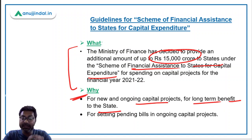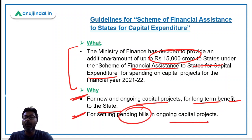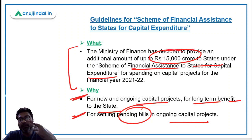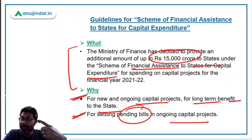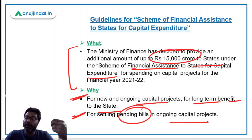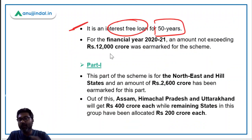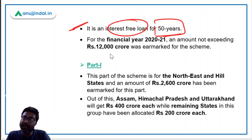The fund must be spent on capital projects only. It can also be used for settling pending bills in ongoing capital projects. Remember the dual objective: number one is for new and ongoing capital projects for long-term benefit to the states, and number two is for settling pending bills in ongoing capital projects. Remember, it is an interest-free loan for 50 years — it is not a financial grant. This interest-free loan is for a very long period of 50 years.